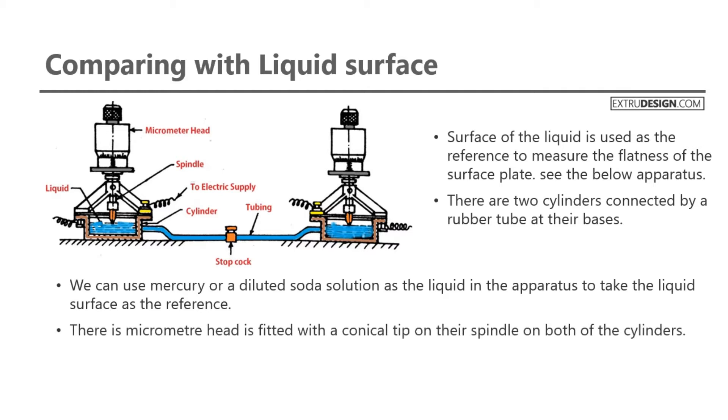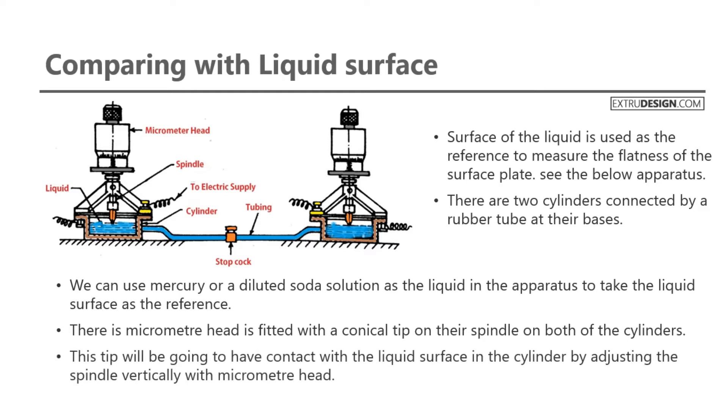A micrometer head is fitted with a conical tip on the spindle on both cylinders. This tip will contact with the liquid surface in the cylinder by adjusting the spindle vertically with the micrometer head.